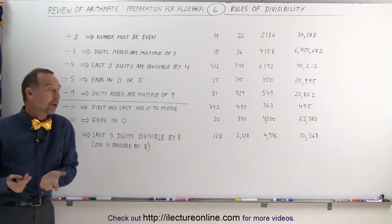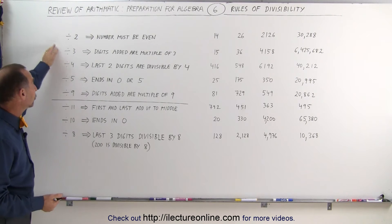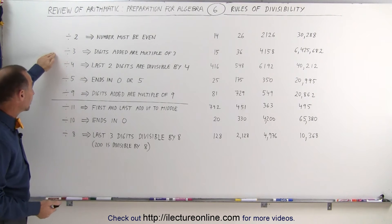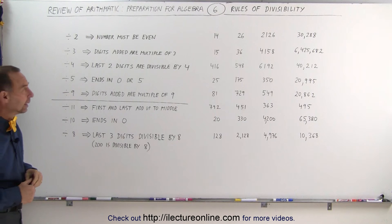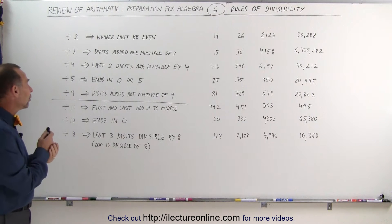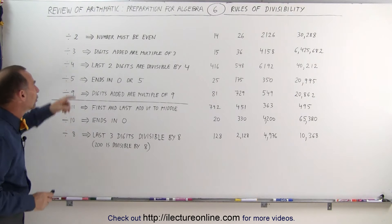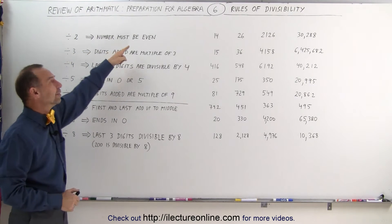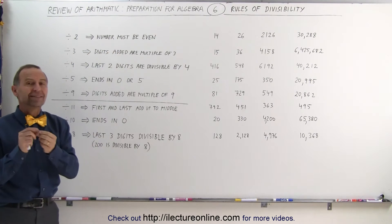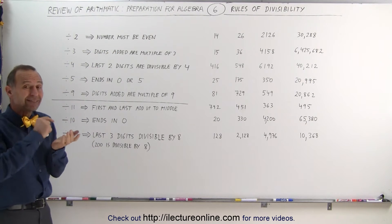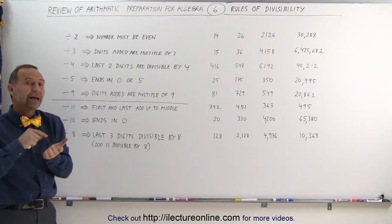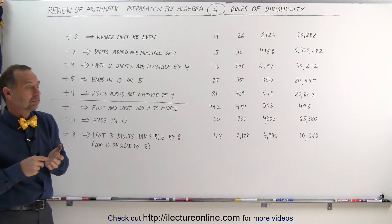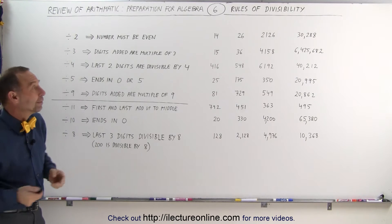How do we know a number is divisible by 2? The rule for divisibility by 2 is that the number must be even — that means the last digit must either be a 0, a 2, a 4, a 6, or an 8.